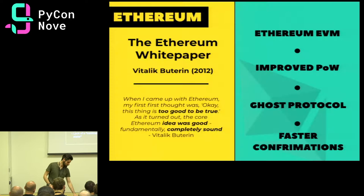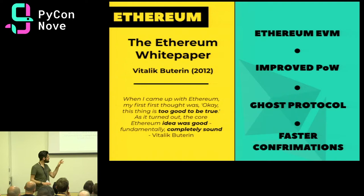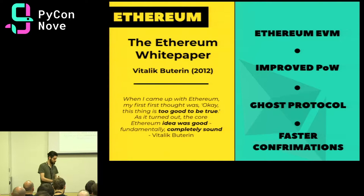All these issues, or at least a part of them, were addressed with Ethereum. Vitalik Buterin proposed this blockchain implementation in 2012 and introduced several very interesting concepts. First of all, the Ethereum Virtual Machine — the EVM — which is a stack-based virtual environment on top of which smart contracts can run. We'll see more details about that in a minute.